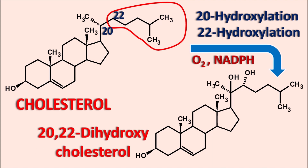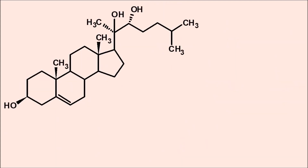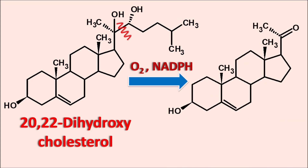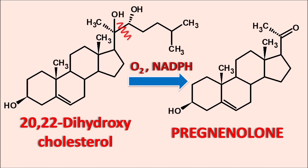The OH groups on the 20th and 22nd carbons facilitate removal of the side chain by oxidative cleavage. The 20,22-dihydroxycholesterol undergoes cleavage at this position so the side chain is removed by oxidative cleavage. In the presence of oxygen and NADPH, this intermediate is converted into the important intermediate pregnenolone, which has the C21 pregnene nucleus with a ketone at the 20th position. This is the first step: conversion of cholesterol to pregnenolone via hydroxylation at the 20th and 22nd positions followed by oxidative cleavage.